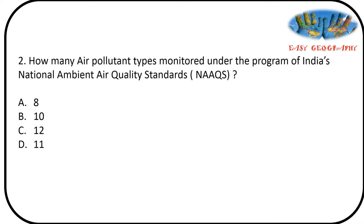Second question: how many air pollutant types are monitored under India's National Ambient Air Quality Standard? Options: 8, 10, 12, 11. Answer is option C — 12 air pollutants. It started on 18th November 2009. The 12 air pollutants are sulfur dioxide, nitrogen dioxide, particulate matter less than 10, less than 2.5, benzene, ozone, lead, carbon monoxide, ammonia, nickel, and arsenic.